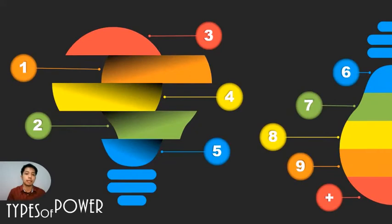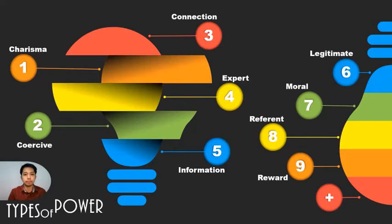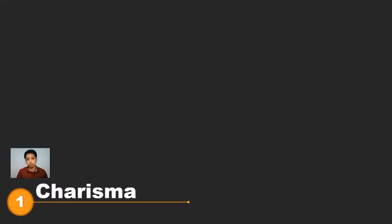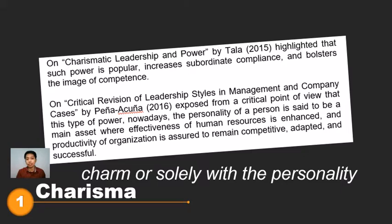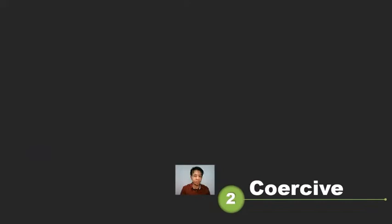This infographic reveals the count of types of power I will be discussing. Charisma is the power that someone holds by charm or solely with the personality. Based on some studies, this power increases the compliance of followers, and there was a study that exposed this as an asset that enhances productivity in the organization.